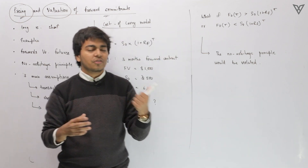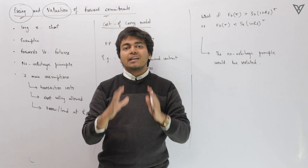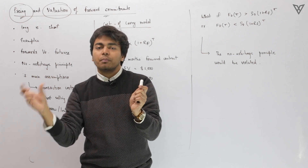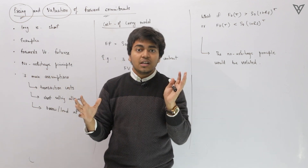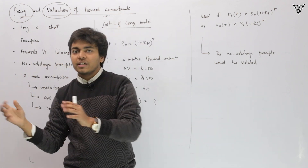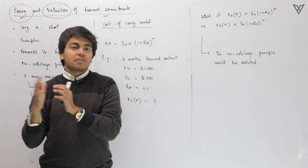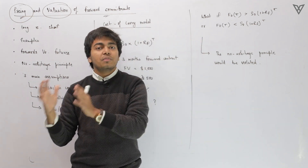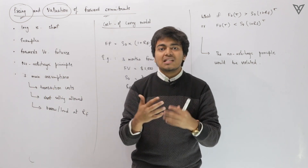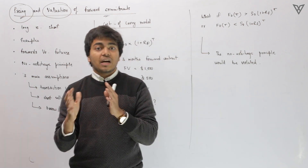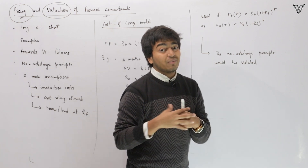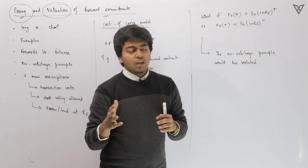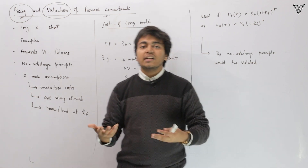The long position in a forward contract is the person who agrees to buy at a particular date for a given price level. For example, if person A is going long forward, he is agreeing to buy a particular commodity or security after a certain period of time at a particular price from person B. It is a commitment — nobody has an option; both parties have to do what they agreed at time period zero.